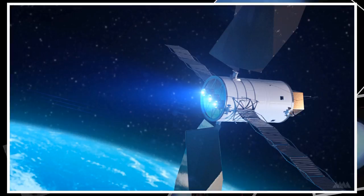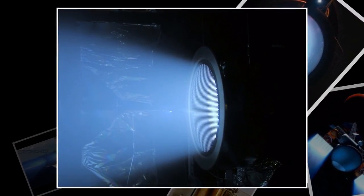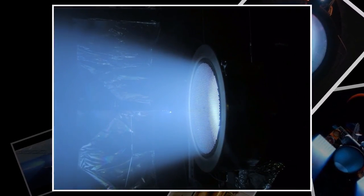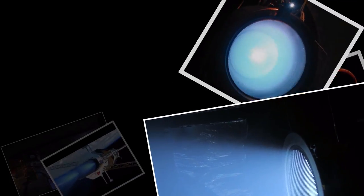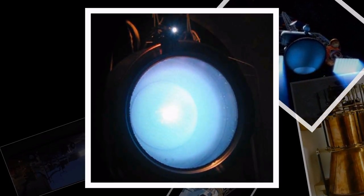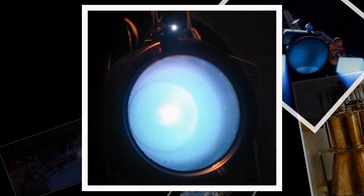The X-3 is a type of hall thruster, a design that uses a stream of ions to propel a spacecraft. Plasma is expelled to generate thrust, producing far greater speeds than are possible with chemical propulsion rockets, according to NASA.